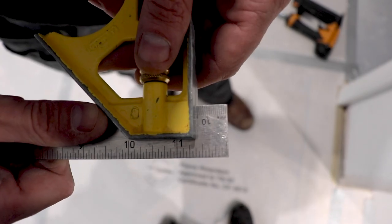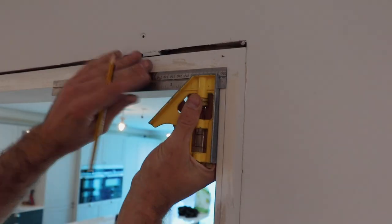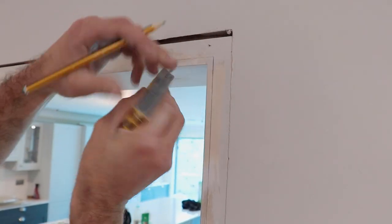We're going to set our combination square to 10mm. This is because if we fit our architrave flush to the door frame there would be no room for your door hinges to be fitted.